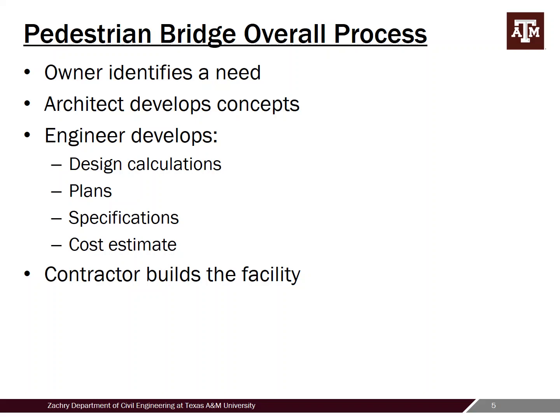Starting off with a big picture of the overall process for pedestrian bridge design — this is greatly simplified, but just to illustrate how this all happens. It all starts with an owner identifying some need. Typically the owner wants to get people from point A to point B and there's some obstacle in between, whether it's a waterway, a rail line, or a highway. The owner identifies this as a problem and hence a bridge is needed.